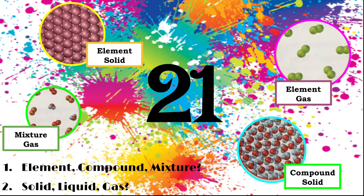B is an element because it is all the same atom, but they are spread out like a gas.